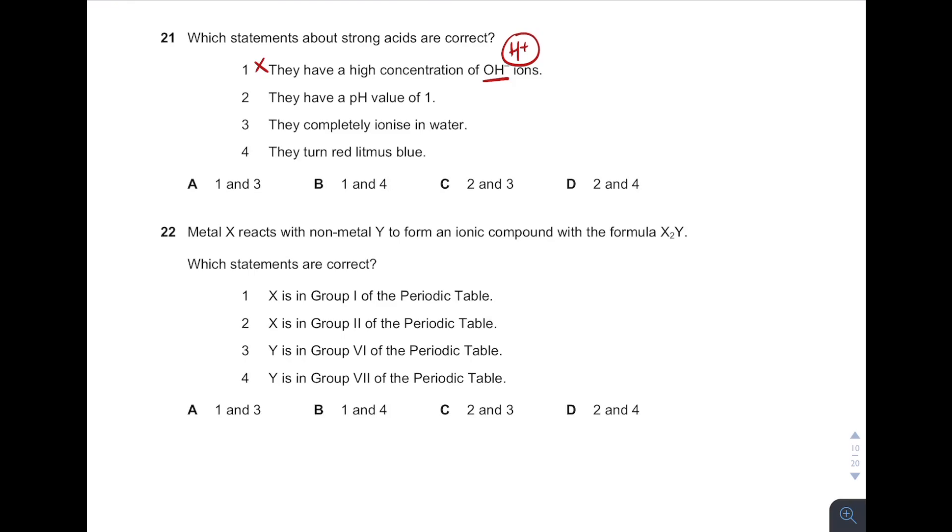pH of 1, yes. Strong acid pH value is from 1 to 3. Correct. Completely ionizes, yes, because they are strong acids. Turned litmus paper blue in color, no. Blue is for alkaline. So therefore, answer 2 and 3, C.